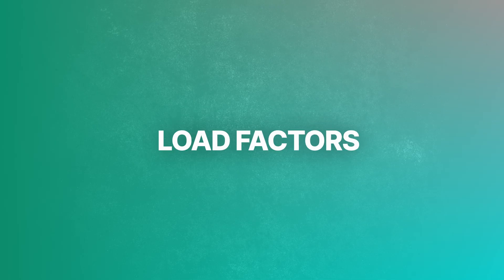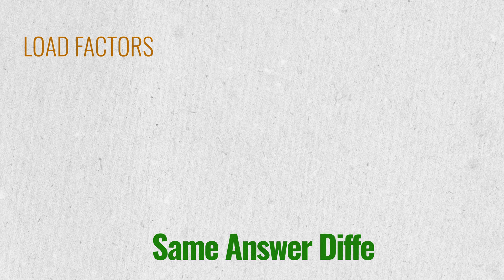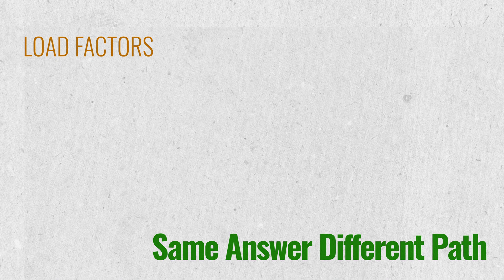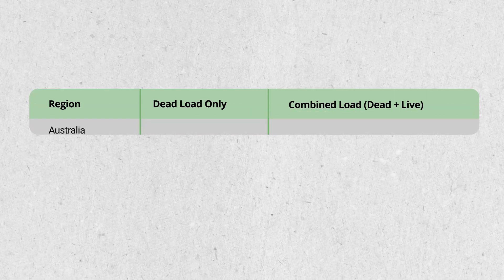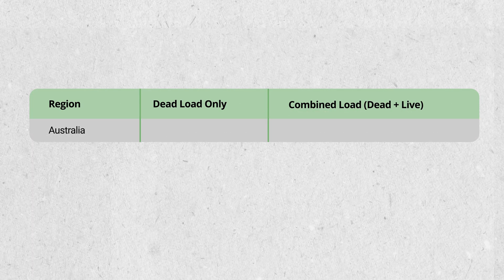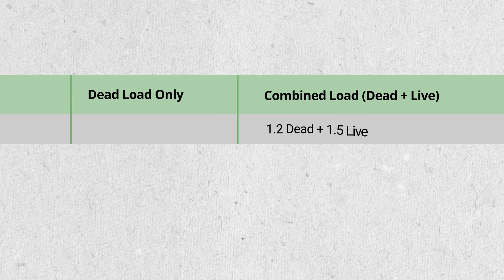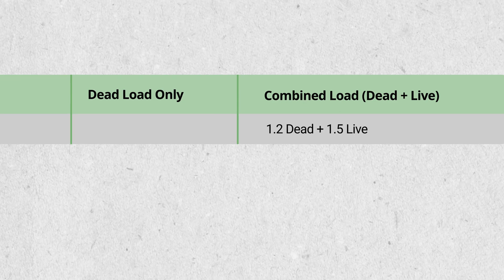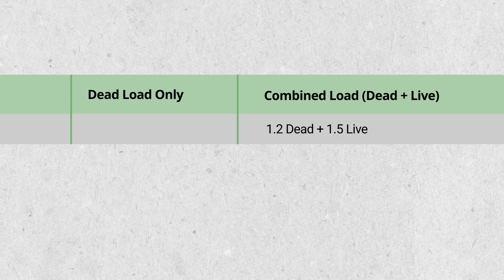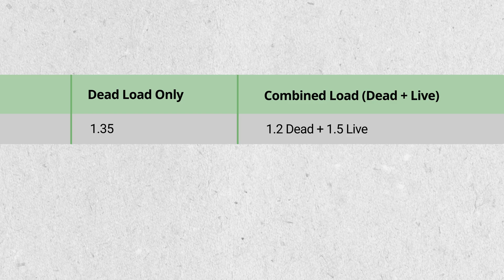Let's first look at load factors. This is potentially where most people start off when they're looking at loading of structures. There are differences here, but a lot of the time, when you combine them together, they lead to very similar results — just how you've combined them to get to that answer. So if we're looking at Australian standards, for example, a typical load case under gravity load is 1.2 dead plus 1.5 live. Even if you're just looking at dead load alone, it's a 1.35 dead load.